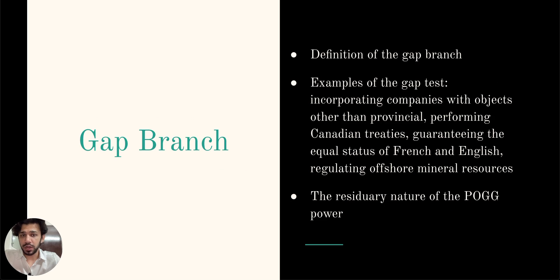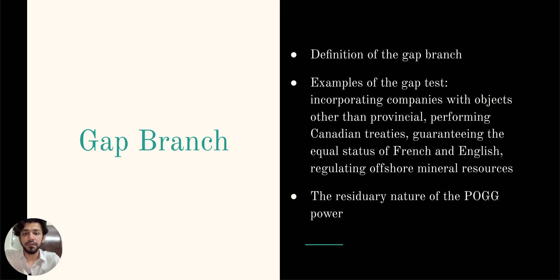The gap branch of the POG power is the power to fill gaps or lacuna in the distribution of legislative powers between the federal government and the provincial governments. This power is used in cases where a particular matter is not explicitly mentioned in either the federal or provincial heads of powers. The gap test is based on the residuary nature of the POG power, which allows it to fill any gaps not covered by the enumerated heads of powers.